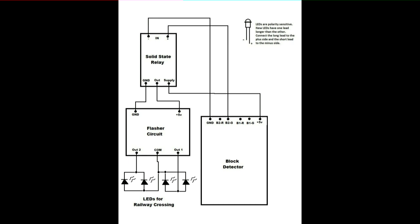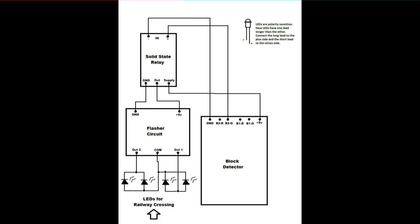Now we will move to the circuits which operate the LEDs of the railway crossing. When the train enters the block with the railway crossing, I use one of the green LED outputs of the block detector for that block — in this case B2G — to switch on one of my solid state relay boards. I feed plus 5 volts to the supply input of this board, and when this board is switched on, it feeds this plus 5 volts through its output to the plus 5 volt power input of the flasher circuit, turning it on. The output of the flasher circuit feeds the LEDs of the railway crossing, causing them to flash back and forth. The solid state relay board is needed because the green LED output of the block detector does not have enough current capability to power the flasher circuit. Either of the green LED outputs, B1G or B2G, can be used even if they are already driving LEDs of the block signals.